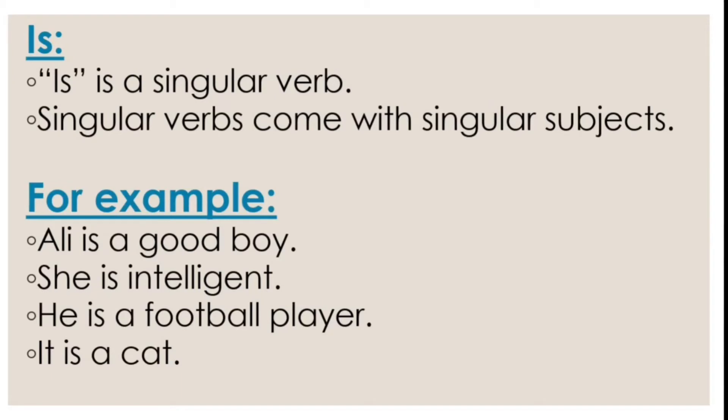'Is' is a singular verb — grammatically, singular verbs come with singular subjects. Singular verbs hamayshya singular subjects ke saath aate hai. For example: 'Ali is a good boy' — Ali ek achha ladka hai. Ali is a singular subject. 'She is intelligent' — woh hoshiyaar hai. 'He is a football player' — woh football player hai. 'It is a cat' — ye ek billi hai. These all are singular subjects.